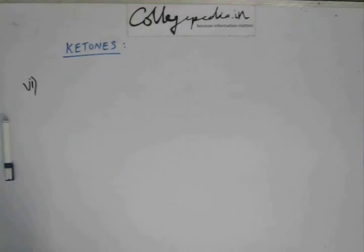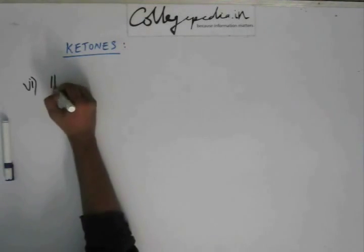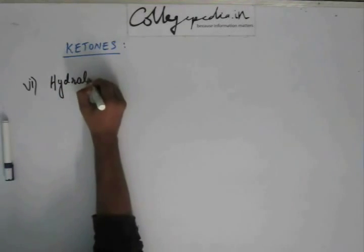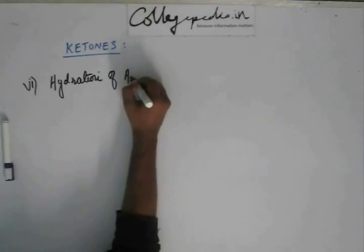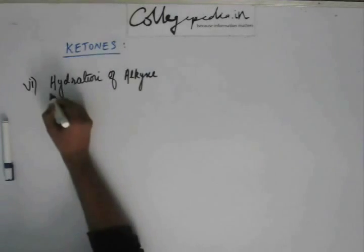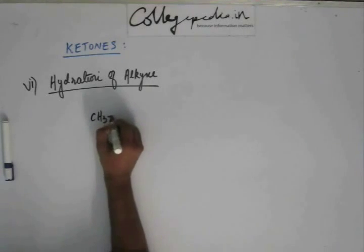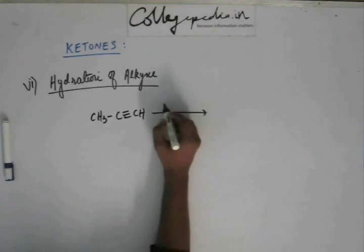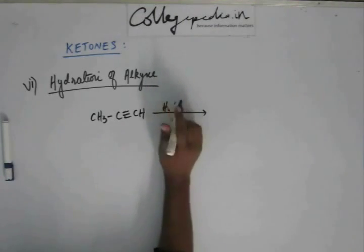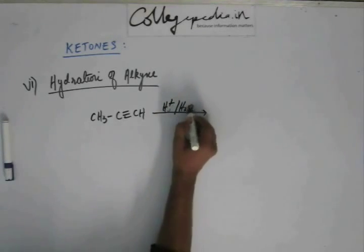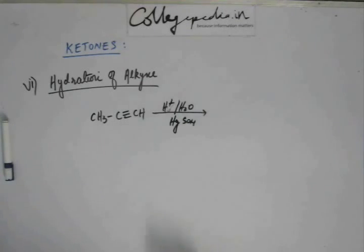We move on to the next reaction — the hydration of alkyne, which we have already studied in the chapter of hydrocarbons. This reaction involves an alkyne; suppose we take propyne and carry out hydration on it. We take HgSO4, which acts as a catalyst.